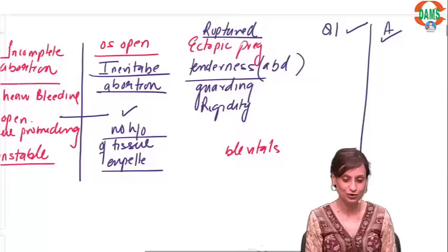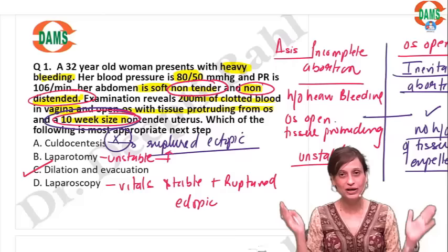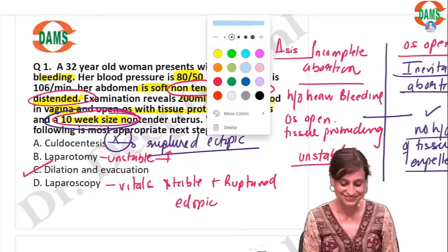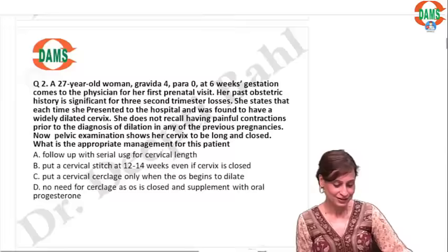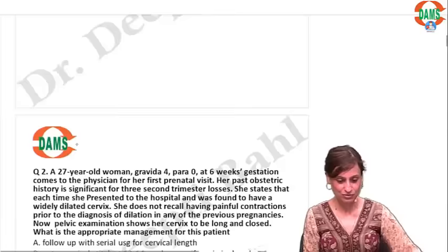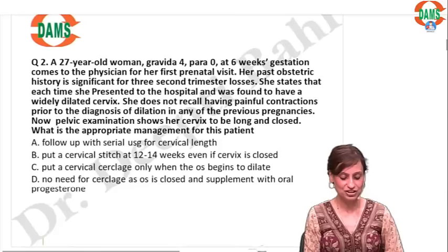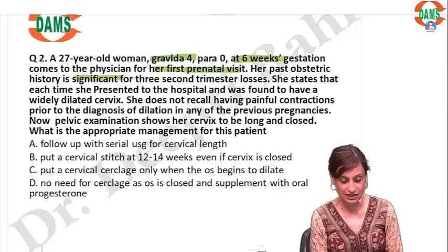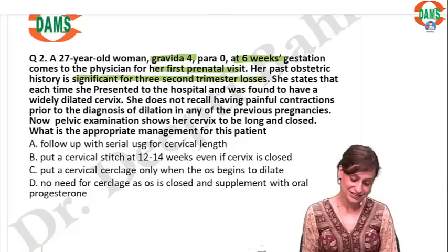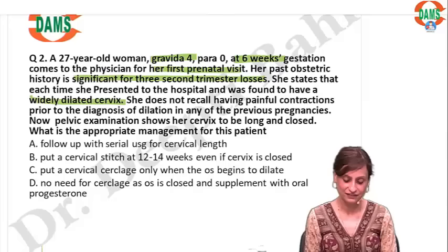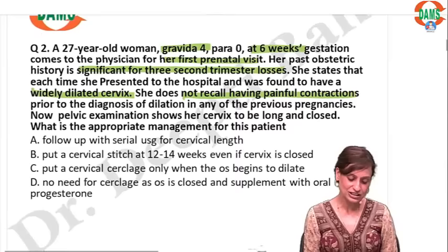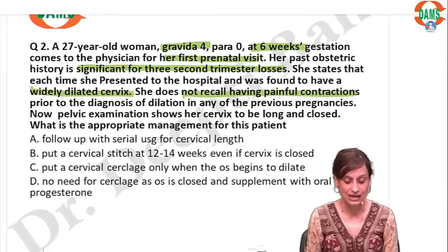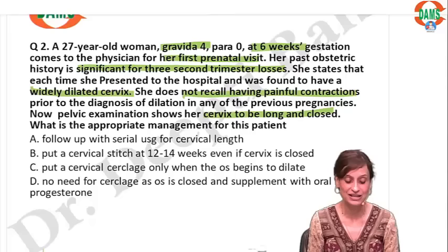Let's move on to question number two. Your patient is Gravida 4. She is currently six weeks pregnant and has come for her first prenatal visit. Her past obstetric history is significant for three second-trimester losses. She says that every time she goes to a hospital she has a widely dilated cervix. She does not recall having painful contractions prior to the diagnosis of dilatation in any pregnancies. Pelvic examination shows cervix is long and closed. What is the best appropriate management?